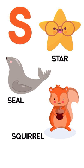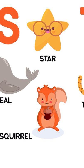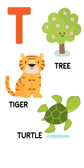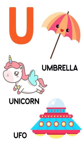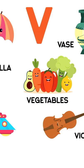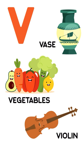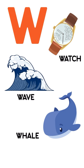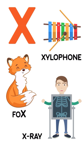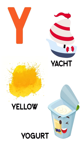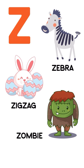S. Star, Seal, Squirrel. T. Tree, Tiger, Turtle. U. Umbrella, Unicorn, UFO. V. Vegetables, Violin. W. Watch, Wave, Whale. X. Xylophone, Fox, X-ray. Y. Yacht, Yellow, Yogurt. Z. Zebra, Zigzag, Zombie.